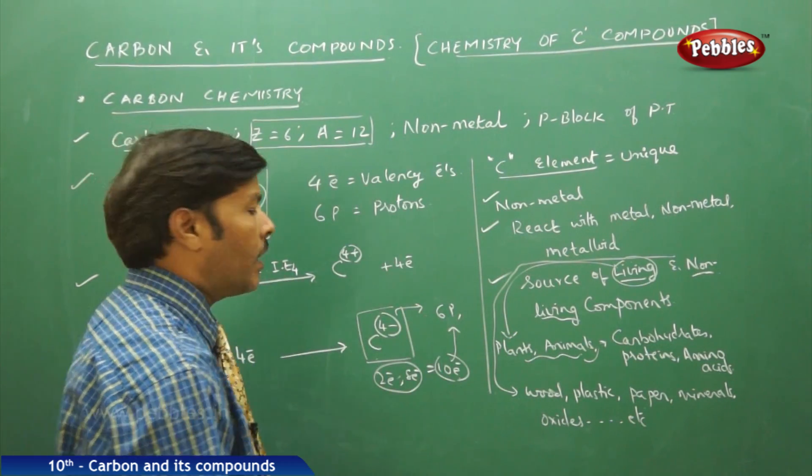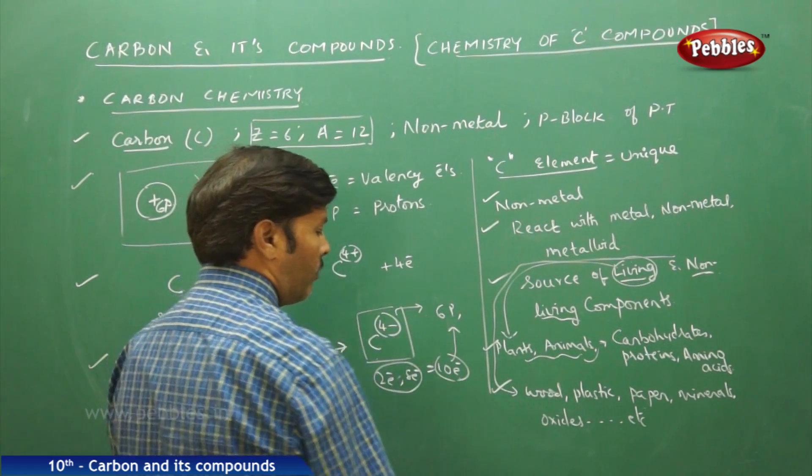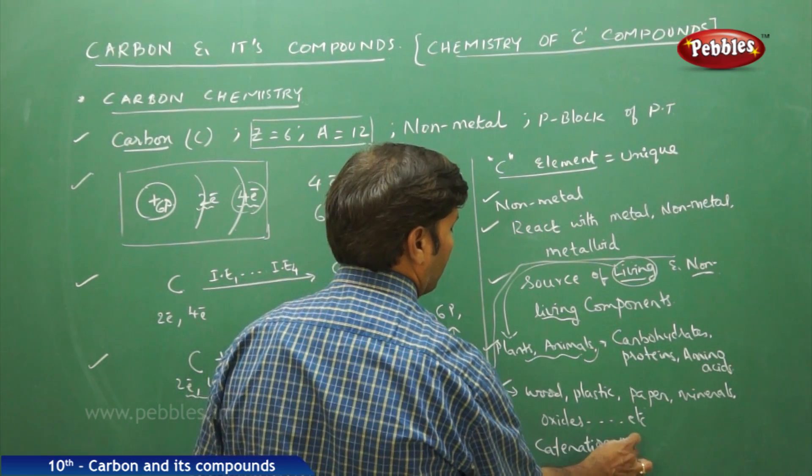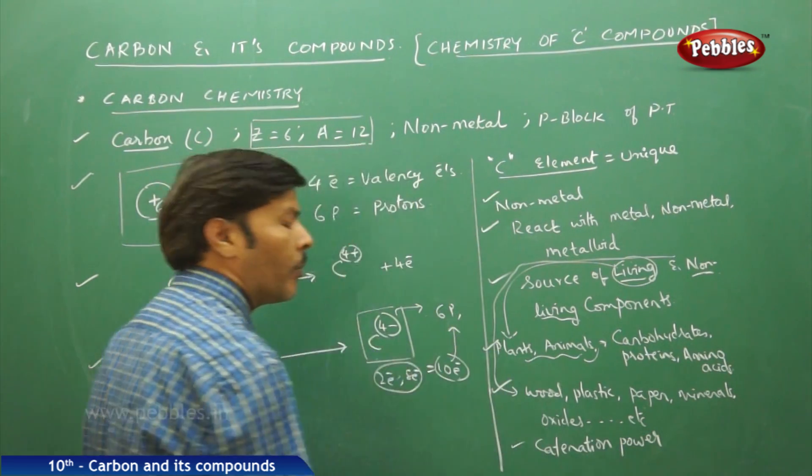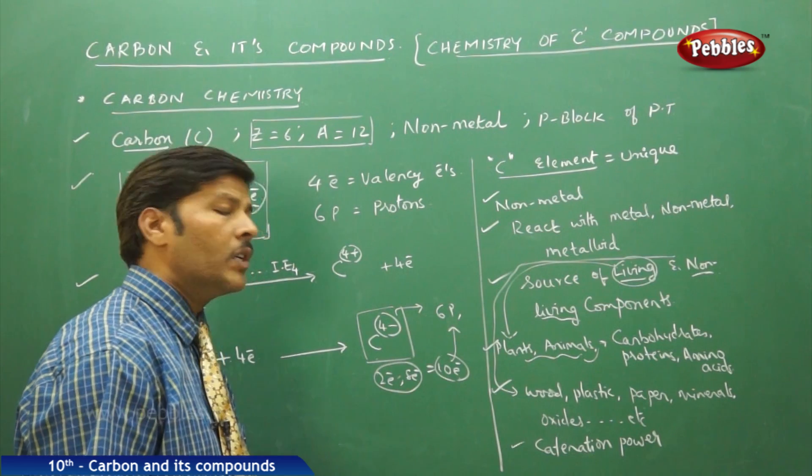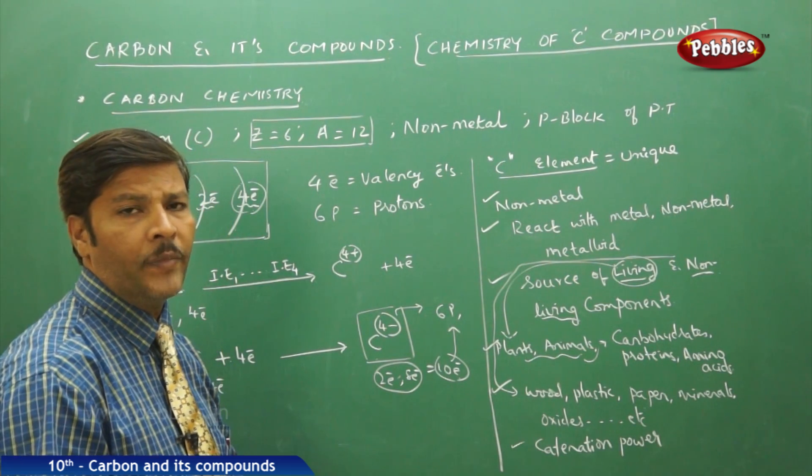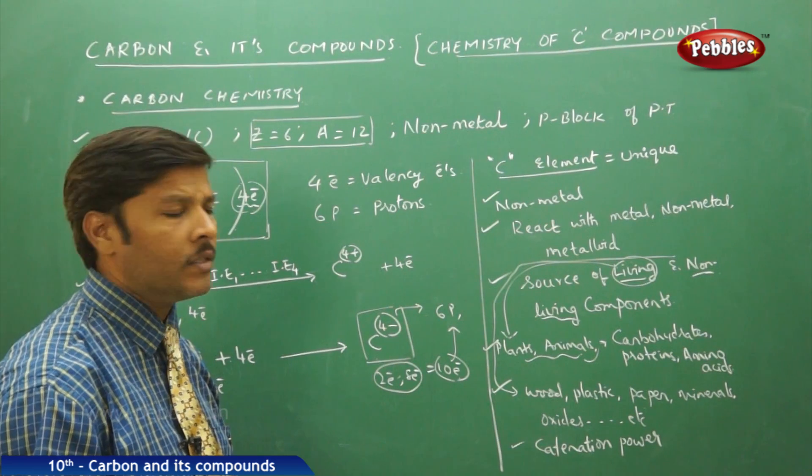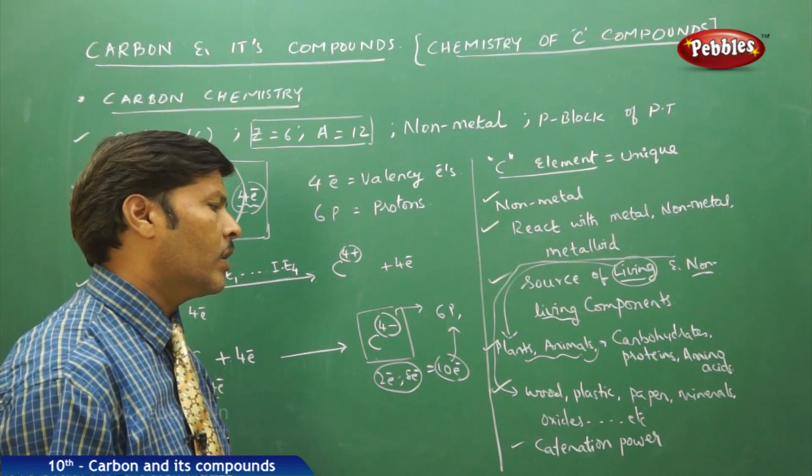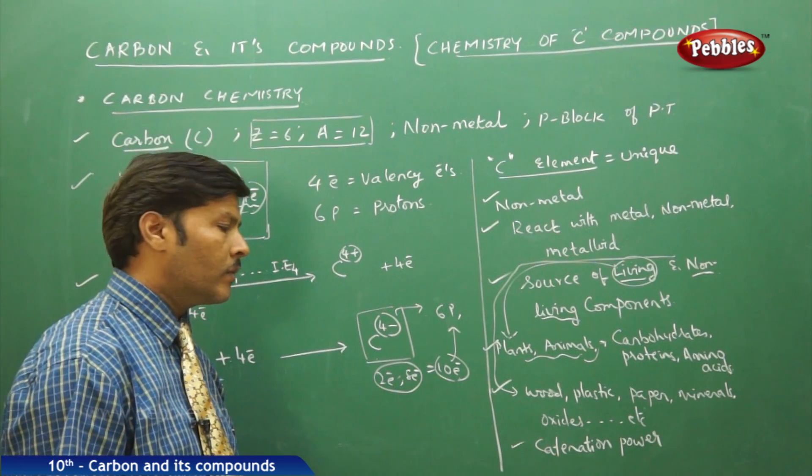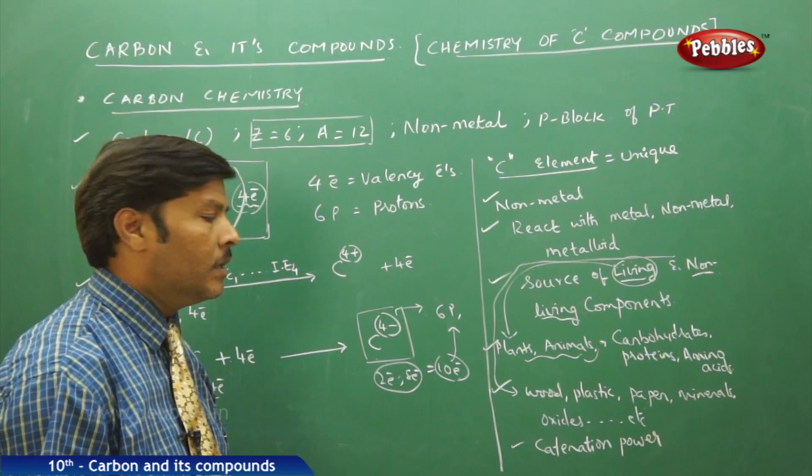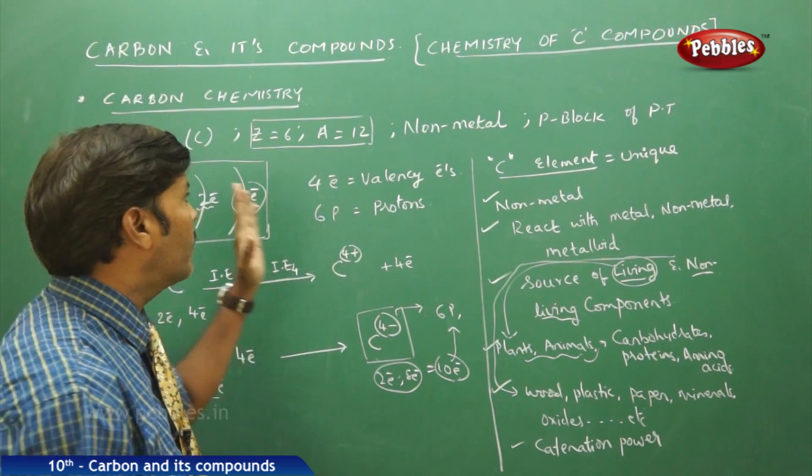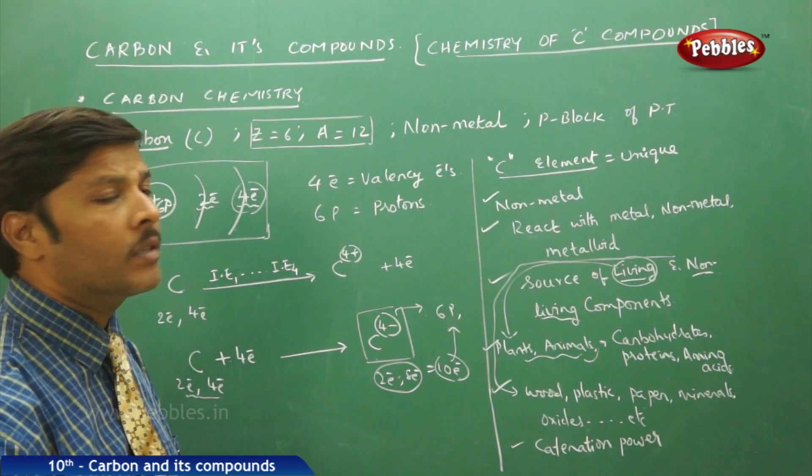Last but not the least, this carbon is also having one more unique property, that one more unique property is it has catenation power. Carbon has a unique property called catenation power. What do you mean by catenation power? The interlinking of the atoms either in straight chains or branched chains in three-dimensional pattern, we simply call it as catenation power. The catenation power is very strong in the case of carbon when compared to all other elements in the periodic table. That is the reason the carbon is studied, that is the reason this carbon element is given a special status in the form of carbon chemistry and we study this carbon chemistry in the form of carbon and its compounds, that is, chemistry of carbon compounds.